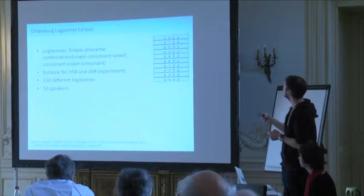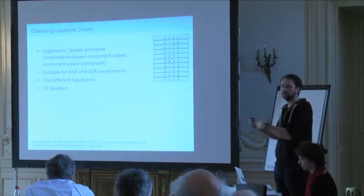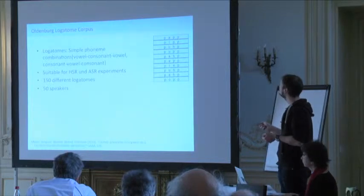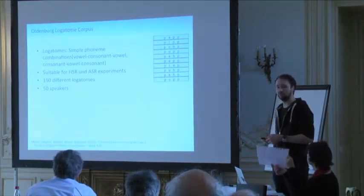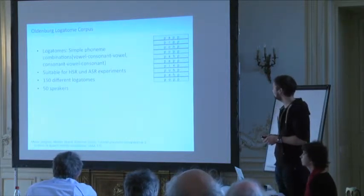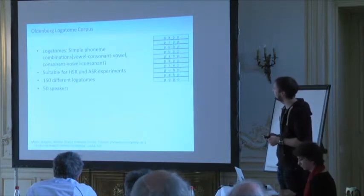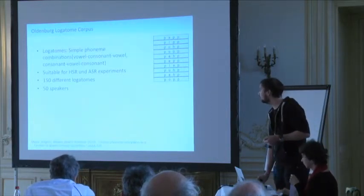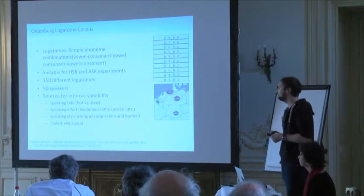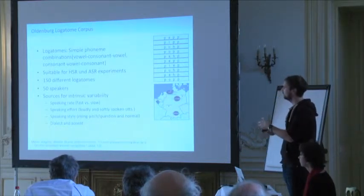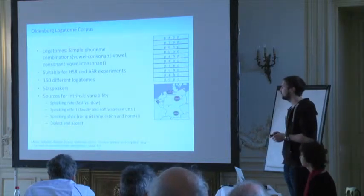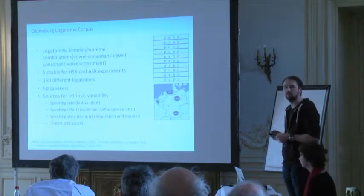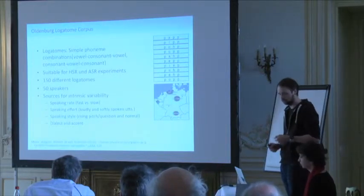These are very simple combinations. On the right side you see a representation of what listeners would see in the experiments — a German transcript of POP, PIP, POP, POOP, PIP, and POP. Listeners had to identify one of those items. We recorded 150 different logotomes and invited 50 speakers. Since we're especially interested in intrinsic variability, we asked speakers to vary speaking rate, speaking effort, and speaking style. We also visited different places in Germany and the French-speaking part of Belgium to capture dialect.